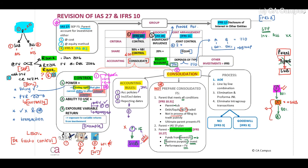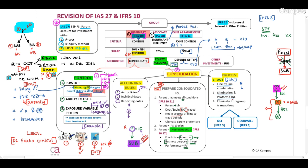Now let's quickly discuss the consolidation process. I like to use the analysis of owner's equity — this is purely for calculation purposes. If you want to make use of it, please do so; if not, it's fine, but ensure that you understand your transactions. Line-by-line combination means we will add the assets of the parent plus the subsidiary, and the liabilities of our parent plus our subsidiaries. We will include our elimination journals and pro forma journals, and very importantly, our intra-group transactions. NCI — non-controlling interest — can either be measured at proportionate share or at fair value.